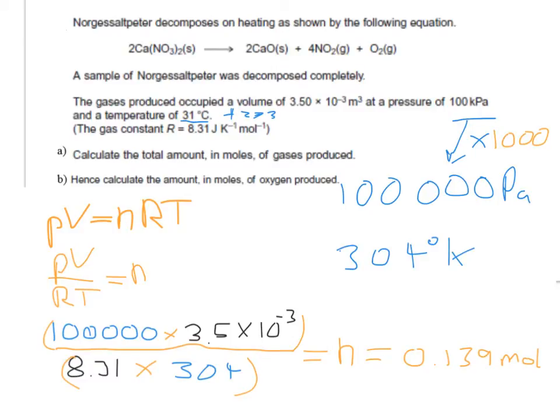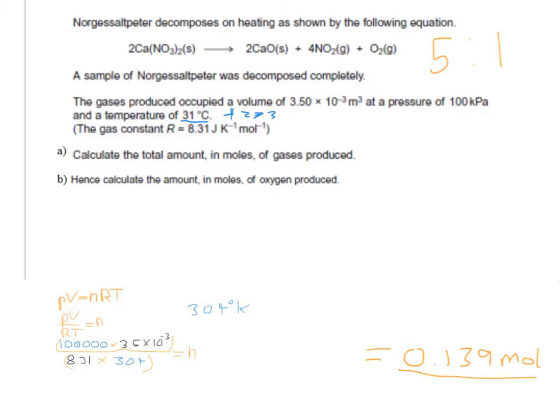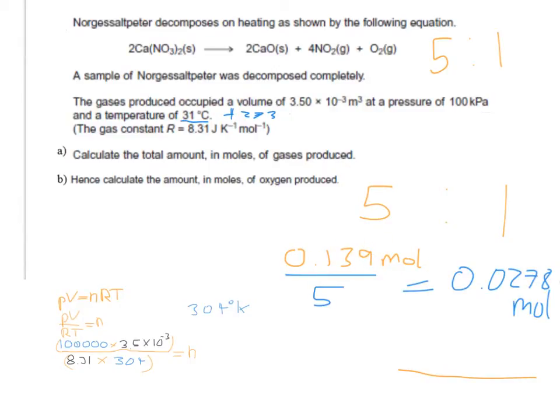You can see that for every five moles of gas produced, we have one mole of oxygen being produced. So if that is the total amount produced of gases, the amount of oxygen is one-fifth of that. So we just need to divide that number by five. We have five gases in total compared to one mole of oxygen. So we've got 0.139 moles of gas in total, divide by five equals 0.0278 moles of oxygen.